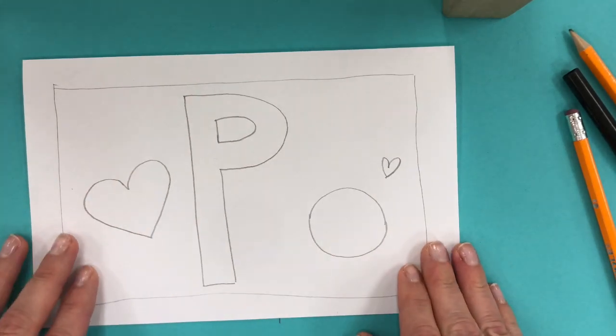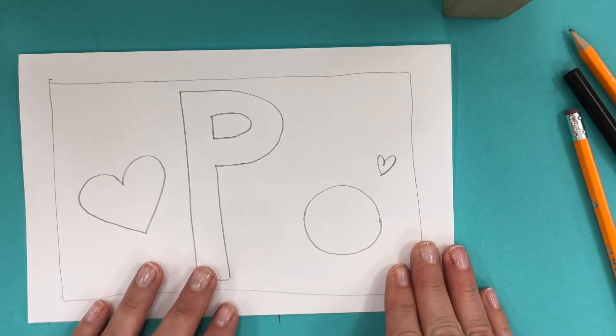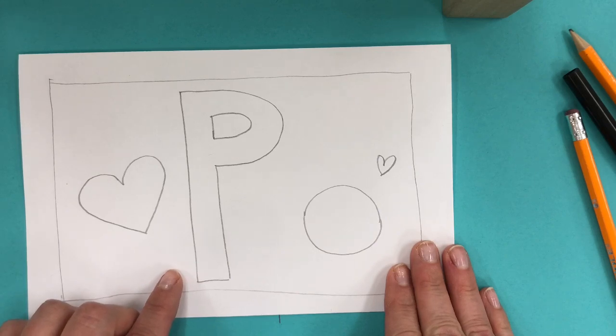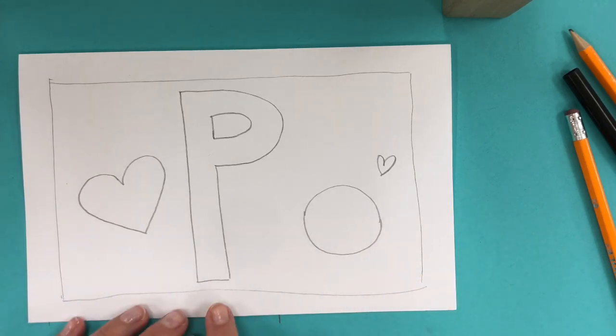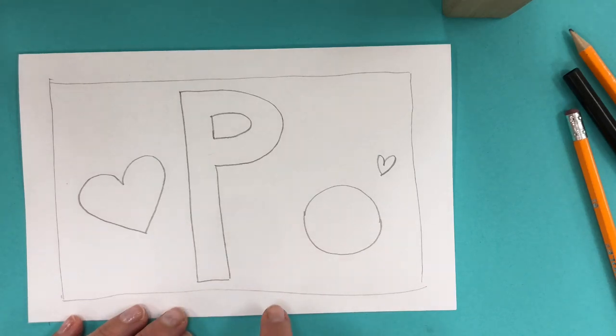When you have finished drawing whatever it is you'd like to sew onto your piece of fabric, you'll notice that the pencil might be a little bit hard to see. So the next step is going to be to trace your pencil lines with something dark like a marker. I'm going to trace mine with marker. A dark color like blue or black will show up well through the holes in your fabric.